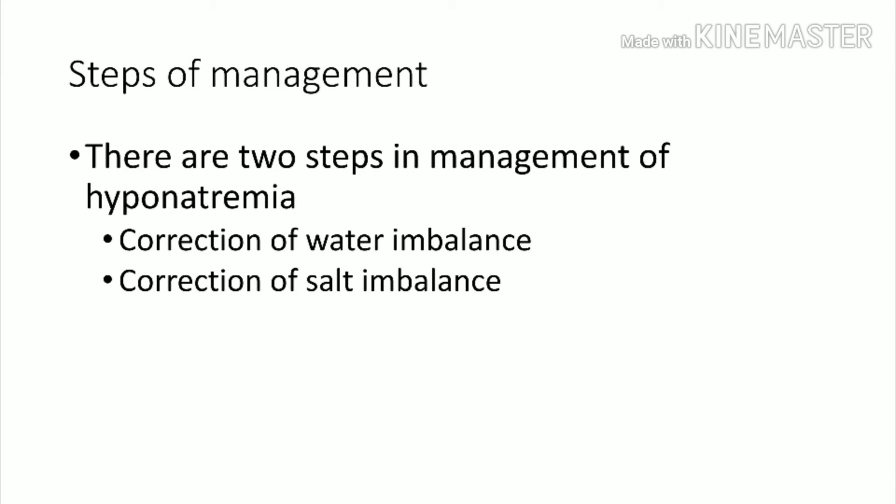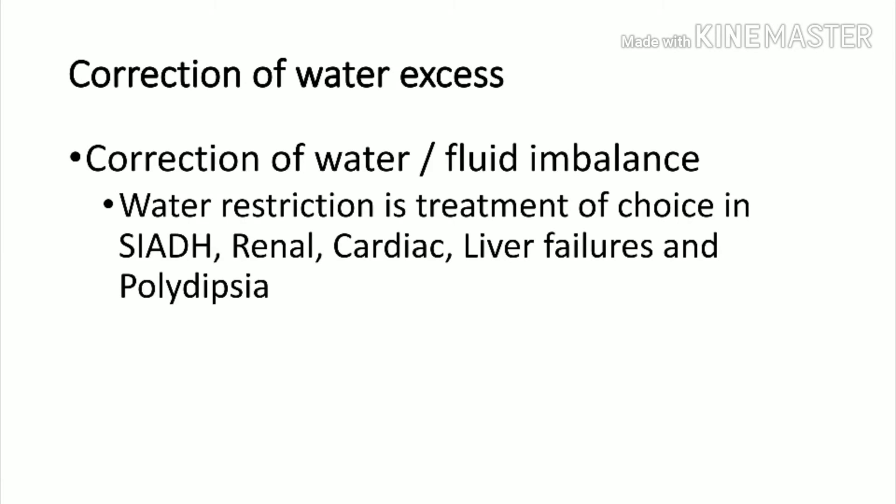There are two steps in correcting hyponatremia: correction of water imbalance and correction of salt imbalance. For water excess or normal-volume states, restrict water — this is the main treatment. For water loss, add water with salt. Water restriction to 1.1 to 1.2 liters is required in SIADH, renal failure, cardiac failure, liver failure, and polydipsia.